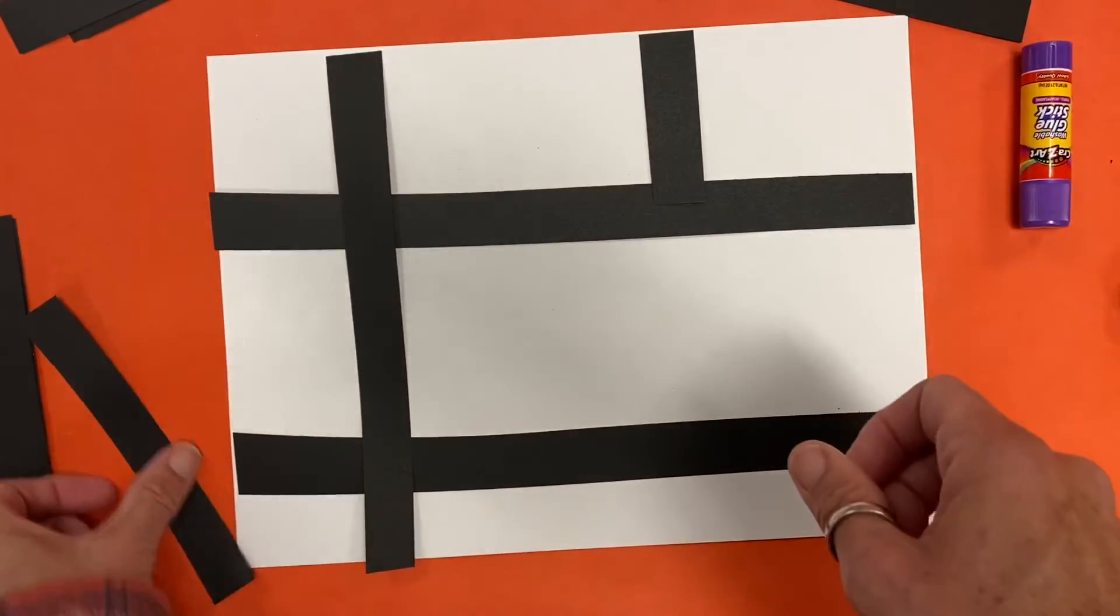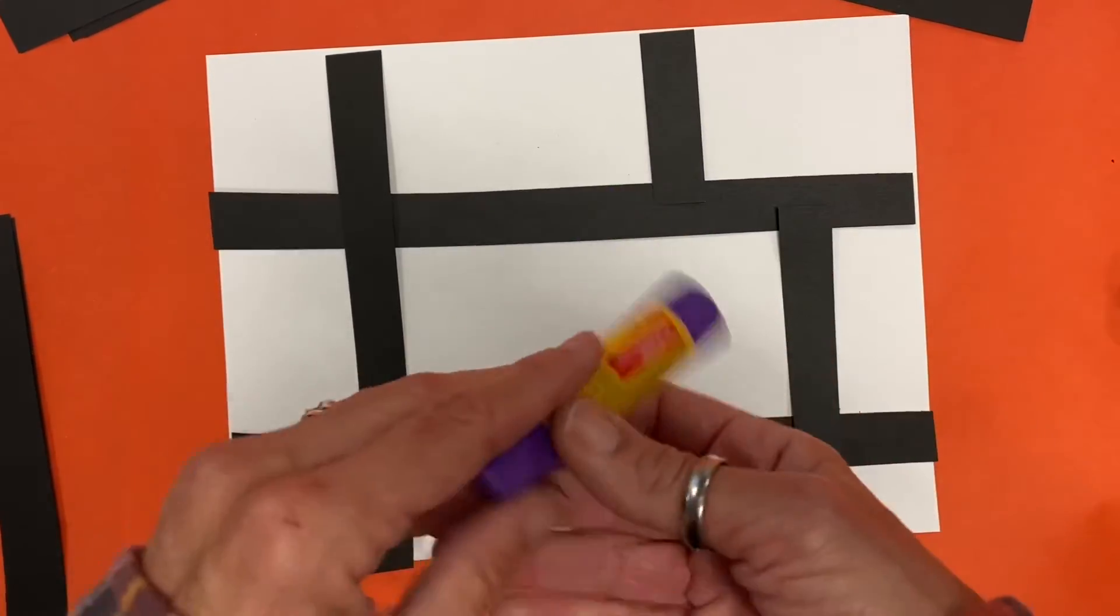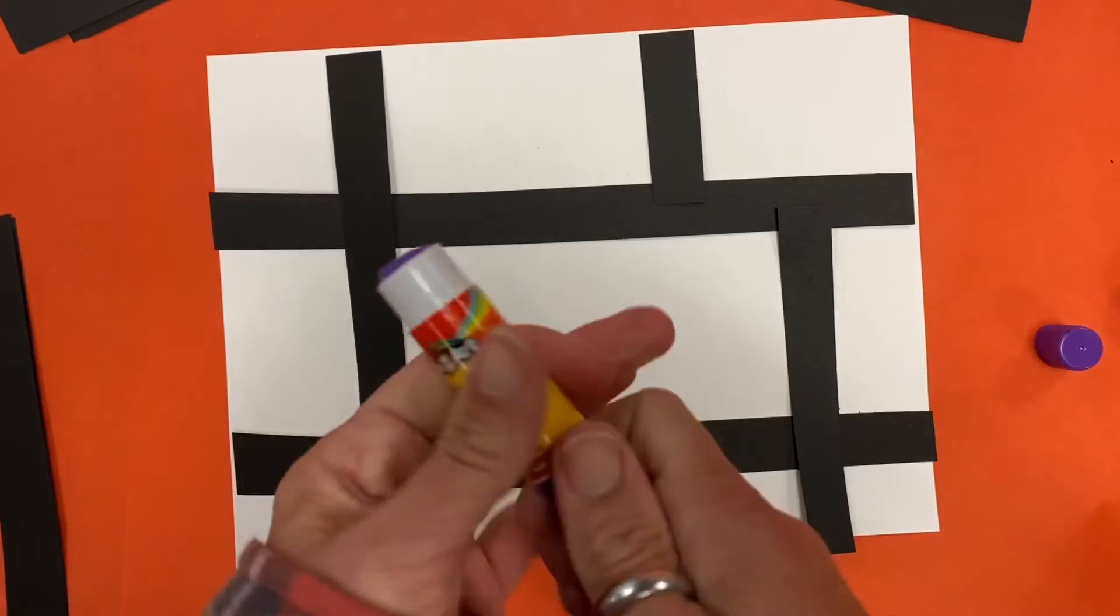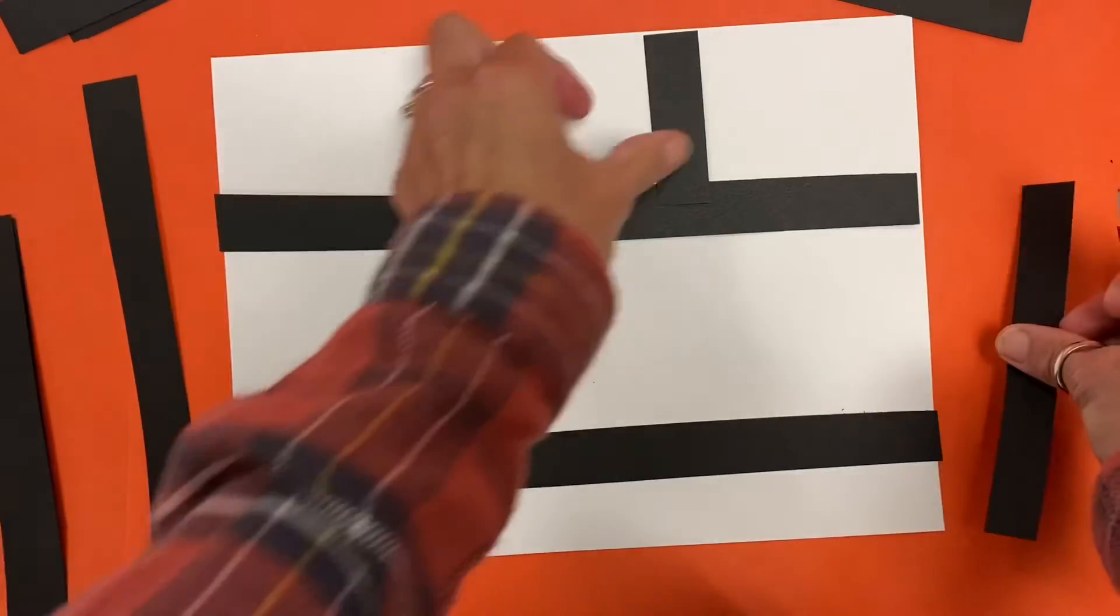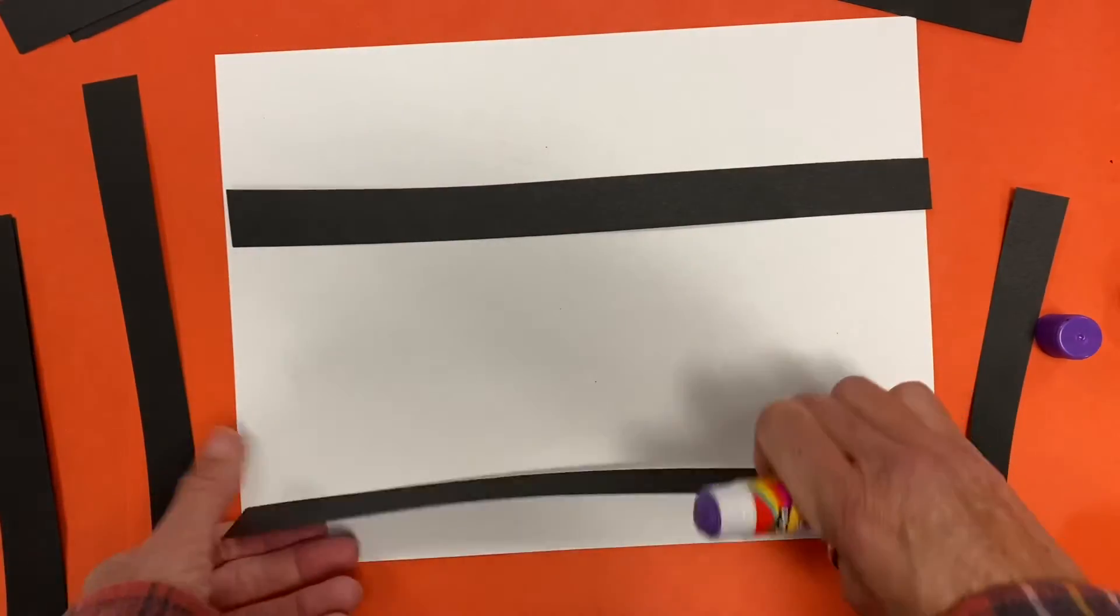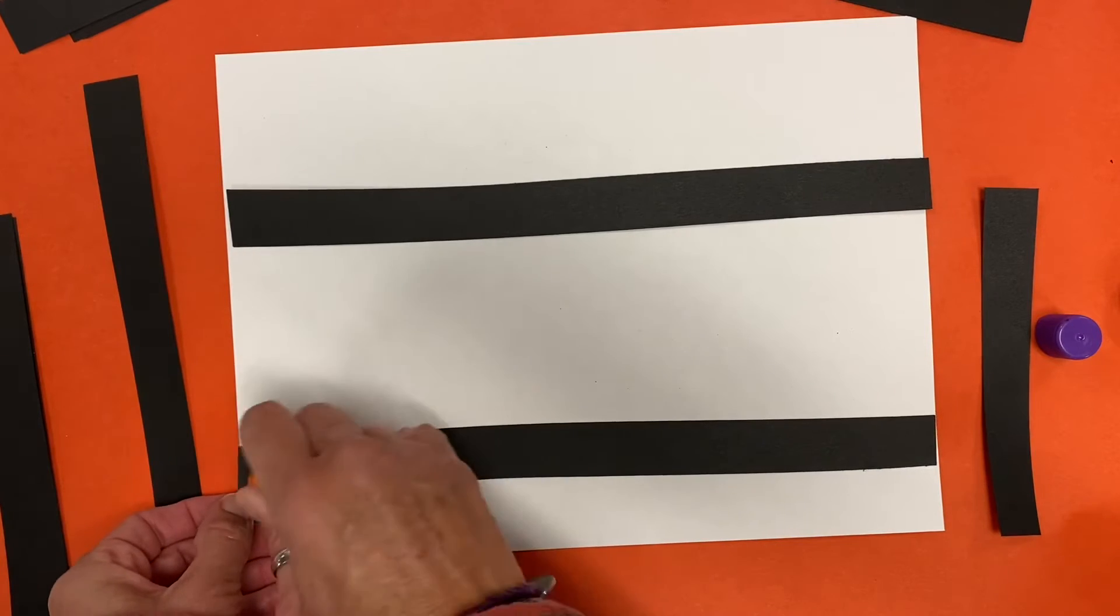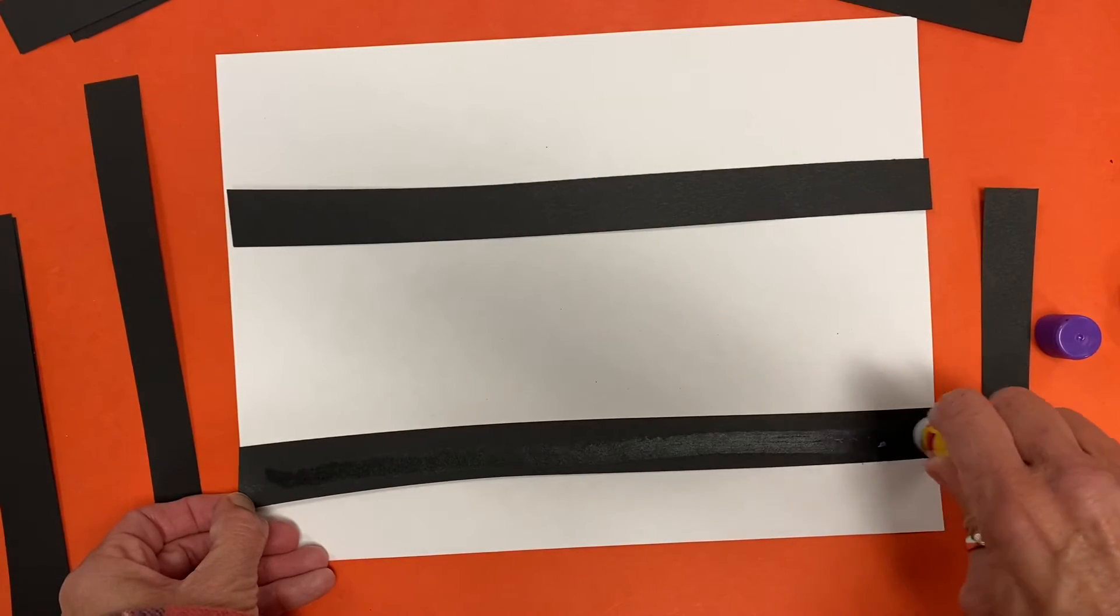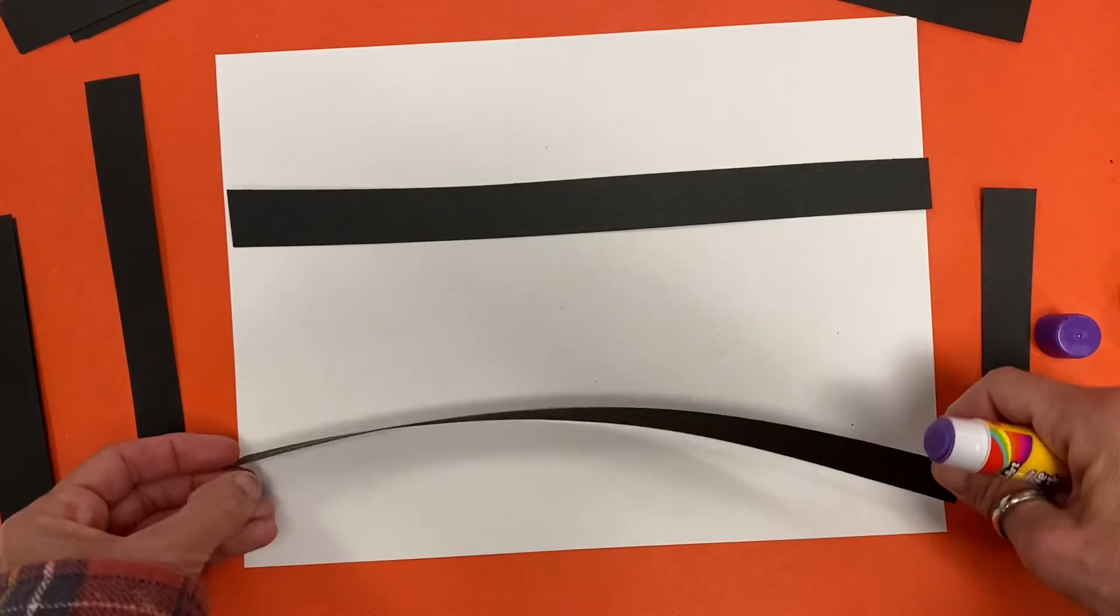So once I have my design planned out, then I'm going to use my glue stick. I'm going to open that up and make sure I've got some glue showing through there. And I'm going to start to glue my papers down and I need to start with the ones at the bottom. When I put my glue on there, remember we want to make sure we get the glue all the way across that line. Don't just put a dot in the center because that won't hold it very well.